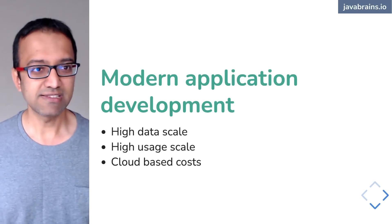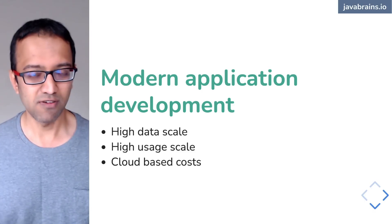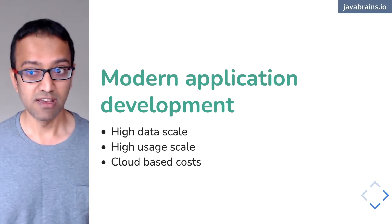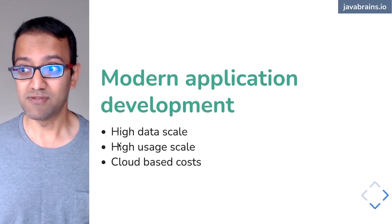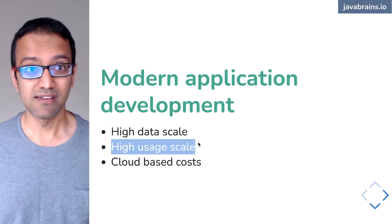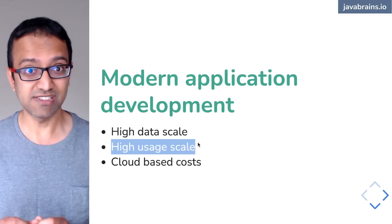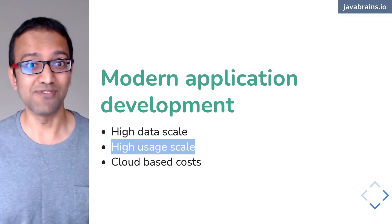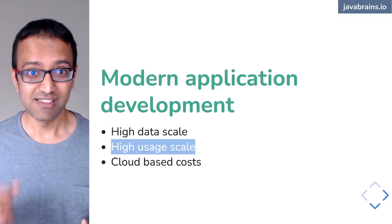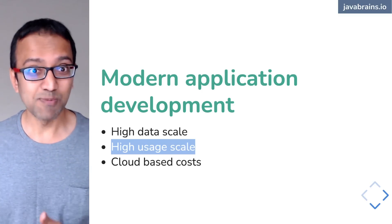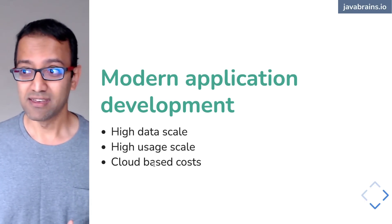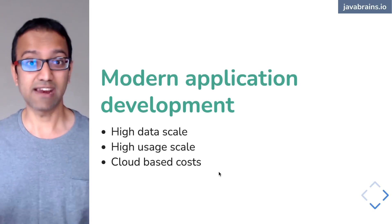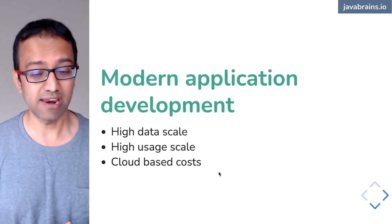You immediately see the impact of badly written inefficient code because it impacts cloud costs. Combine that with high usage scale and every small inefficiency is multiplied by the amount of usage you have. If you have billions of users, that small inefficiency times a billion is what you're going to pay in cloud costs. These are three important characteristics of modern application development.